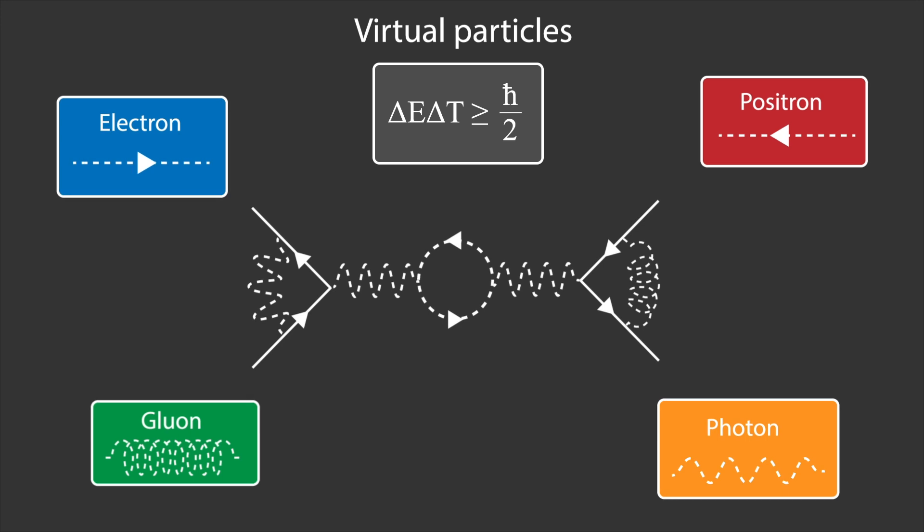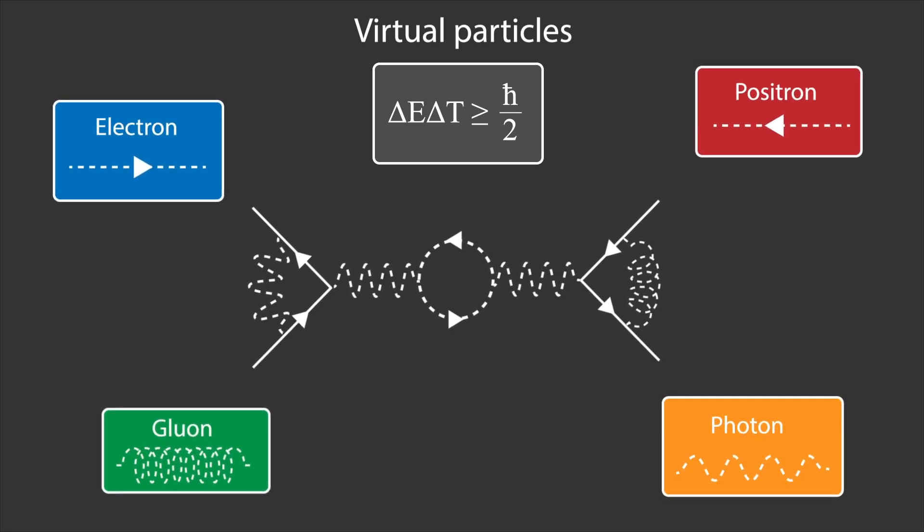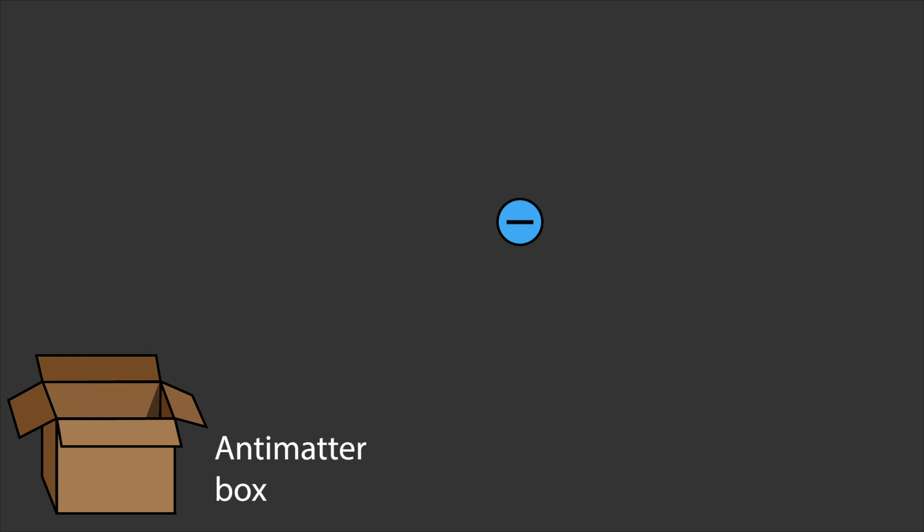So in order to make matter, we just need to generate high energy photons, bring them close enough so that they can interact, remove the antimatter that is also made in this process. And there you go, you have yourself an electron.